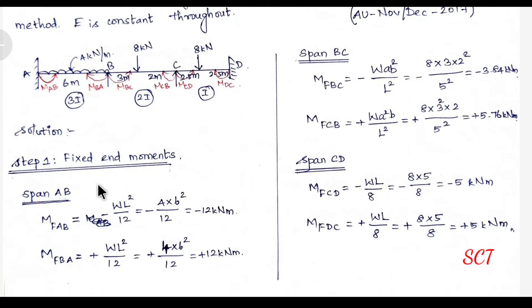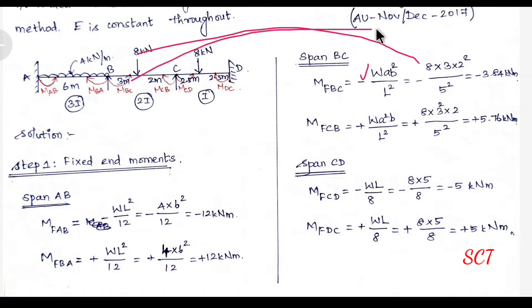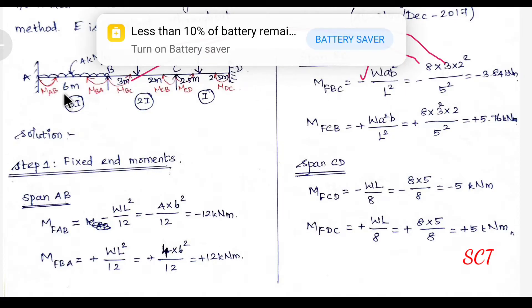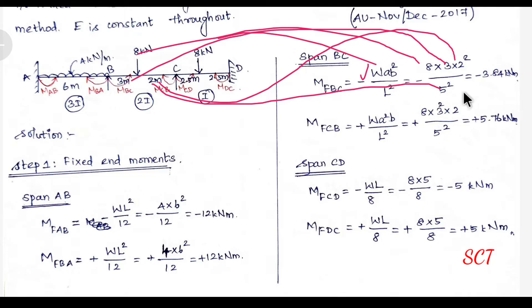Next, for the unsymmetrical load on span BC, with distance A and distance B from each end. The formula is: minus W·A·B² divided by L². W value is 8 kN, A value is 3m, B value is 2m, L value is 3 plus 2 equals 5m. Solving gives MF_BC = minus 3.84 kNm.